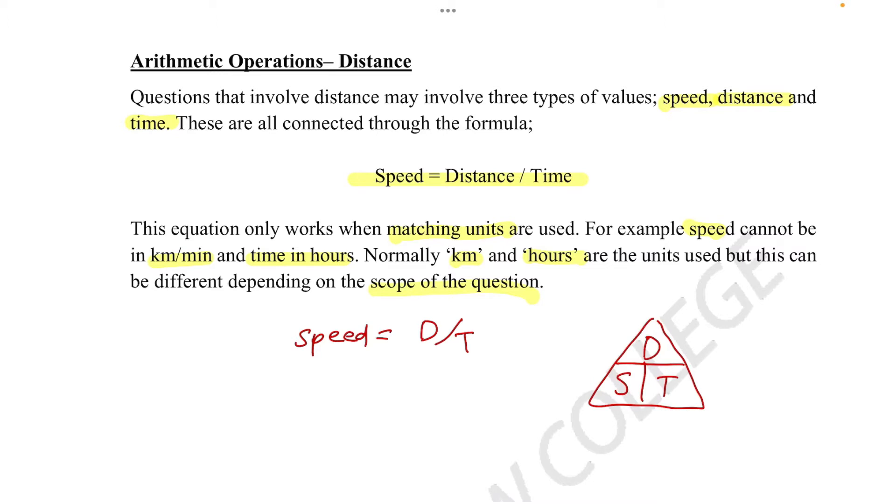Using the same thing, when we're trying to find out what time is, we know it's d over s. So time equals d over s. And finally, when we're trying to find distance, this is a little bit different because s and t is in the same area. And this represents distance equals s times t.